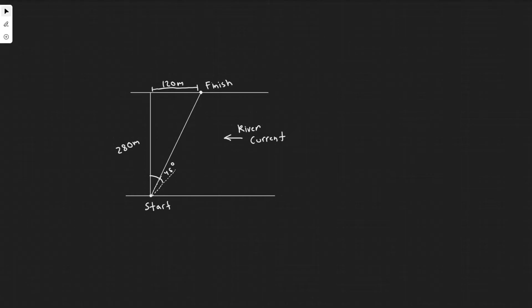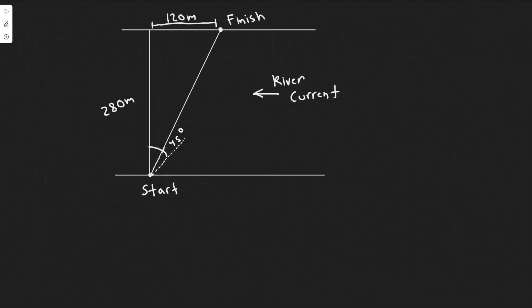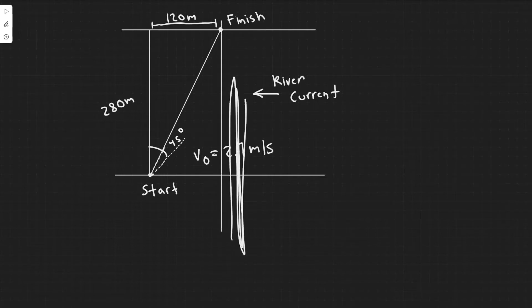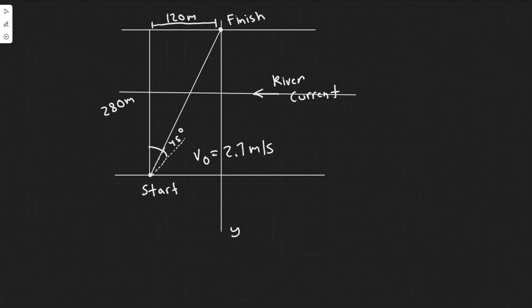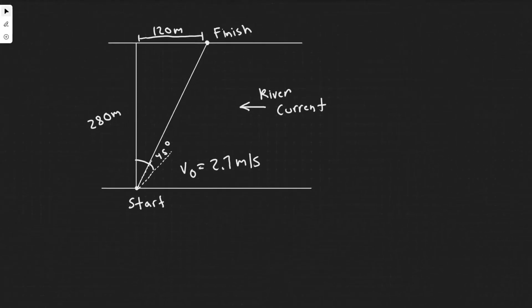The first thing we want to do is split the initial velocity — we know it's 2.7 meters per second — into x and y components. The y direction is traveling across the river this way, and the x-axis goes this way. We'll split it into velocity in the x direction and velocity in the y direction.